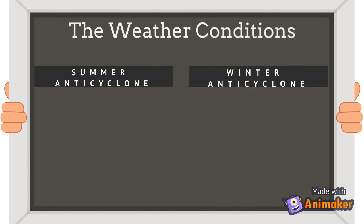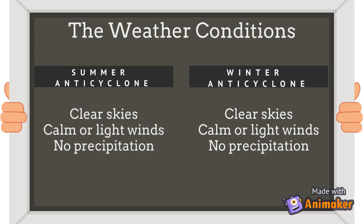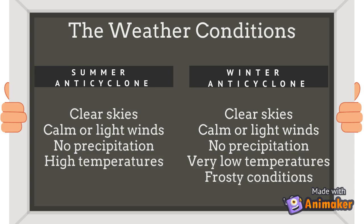Although both summer and winter anti-cyclones are associated with clear skies, calm or light winds, and no precipitation, they differ in temperature. The summer anti-cyclone causes high temperatures, while the winter anti-cyclone has very low temperatures and frosty conditions.